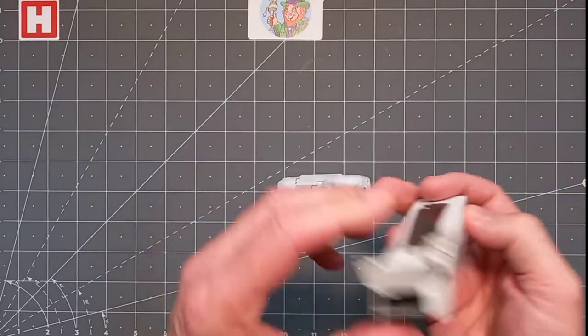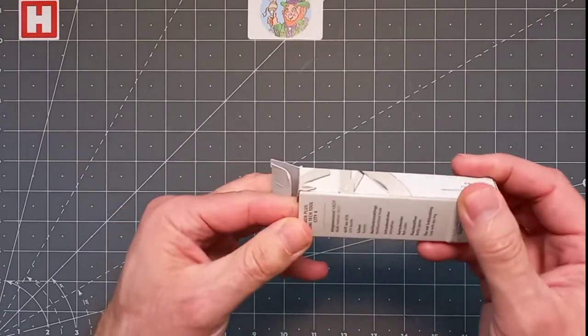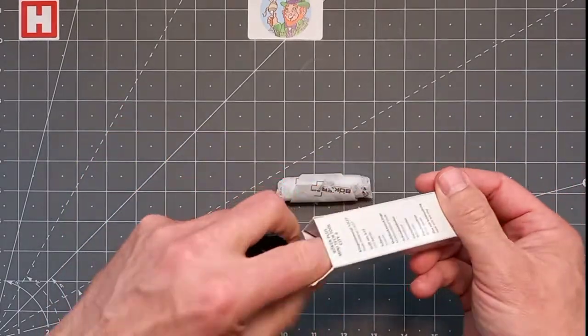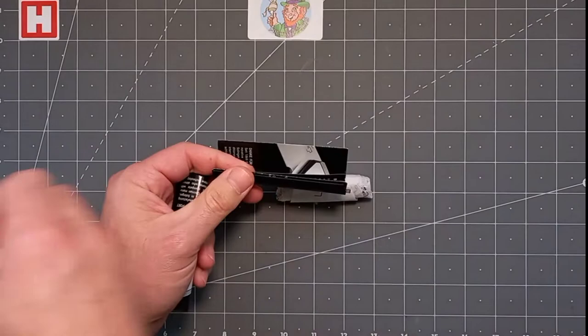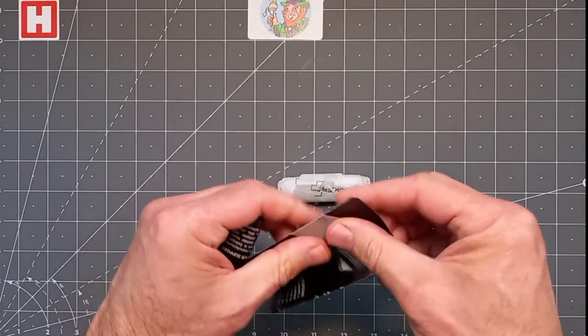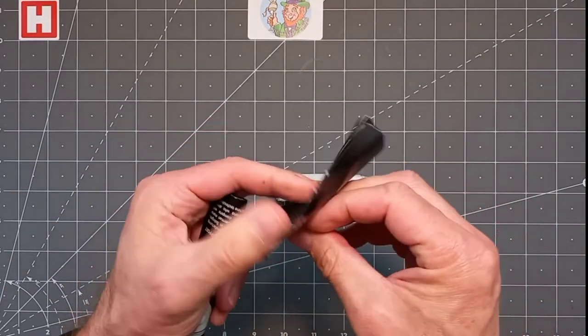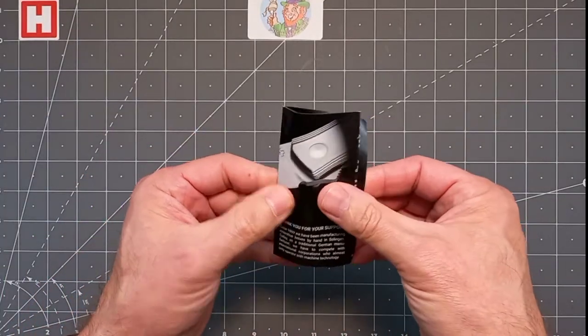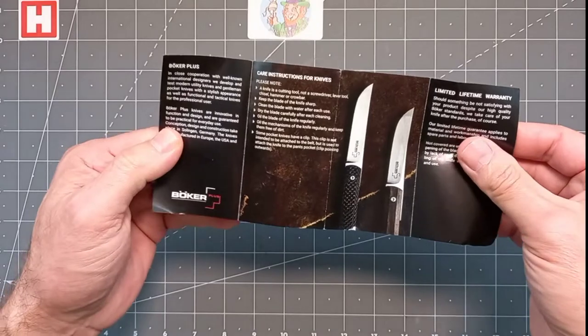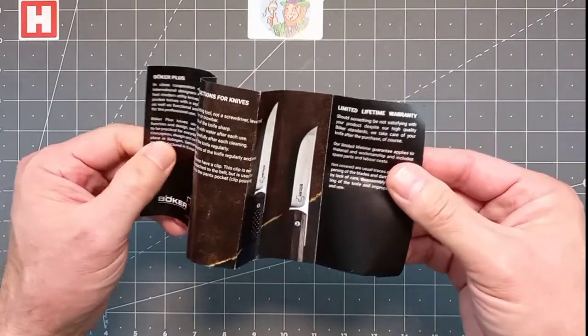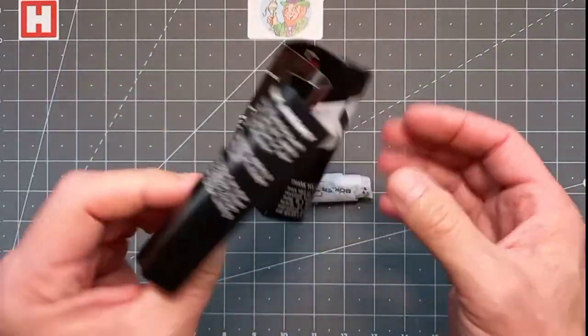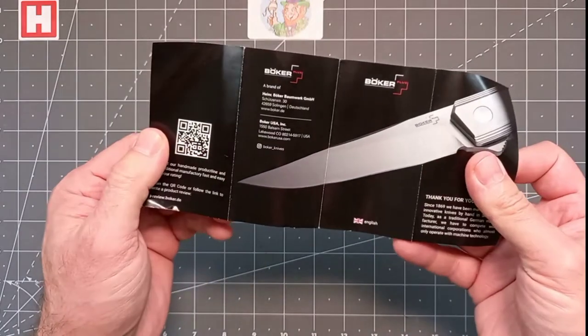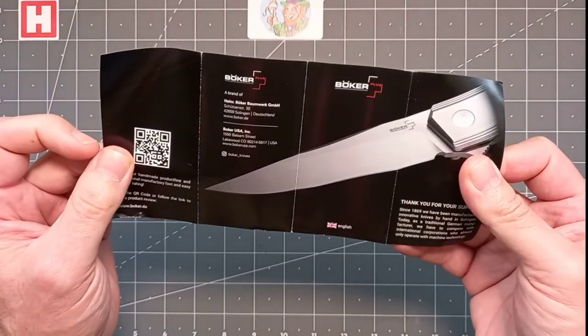Let's see what we got. Instructions in German, not going to be any good. We got English, thank you. Support card, quite all right. Böker care for knives, limited lifetime warranty, the standard stuff you get in there.